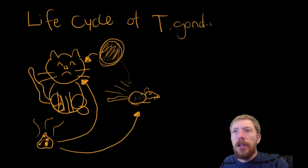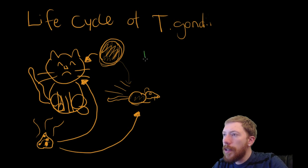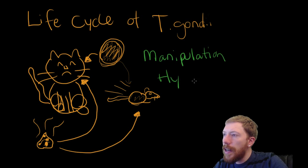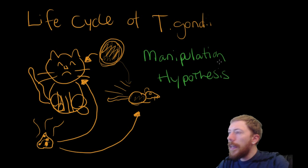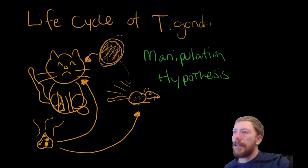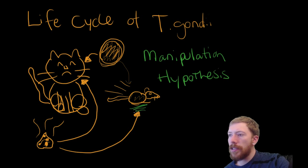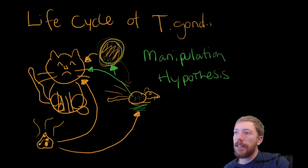So, to overcome this problem, the authors talk about something called the manipulation hypothesis. And the manipulation hypothesis basically states that the parasite will evolve mechanisms to alter the behavior of these intermediate hosts, the rat, change its behavior so that the transmission from the rat back into the cat is increased. You want an increased transfer from the rat back to the cat. That's what will benefit this parasite the most. Because if these rats are always running away from the cats, it doesn't do the parasite any good.